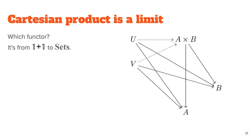As an example, the Cartesian product is a limit. If we have two objects a and b, we can look at them as a functor from the category 1+1 — two objects, no arrows. The Cartesian product is the universal cone among all possible cones for this diagram — it has two projections and that's it.